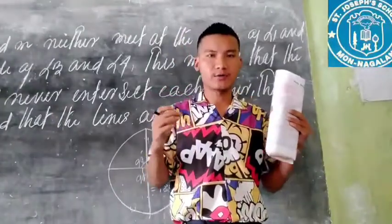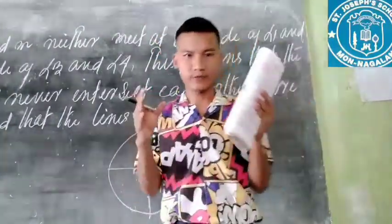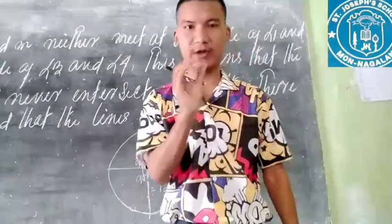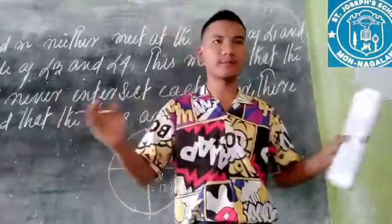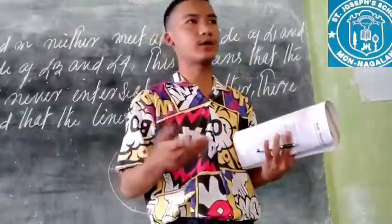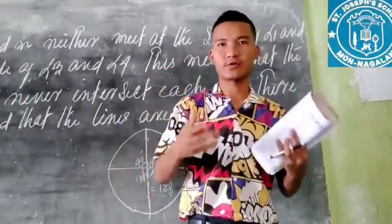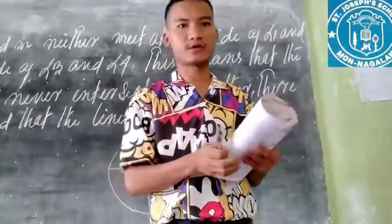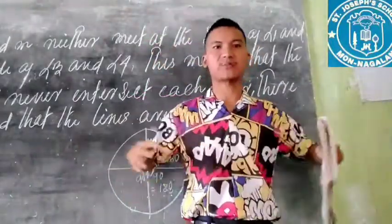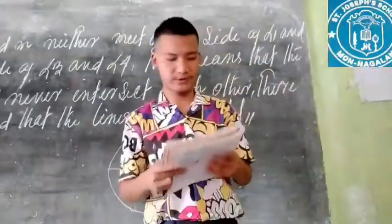Firstly the earthworm will contract its muscle — it will become small in size — and then it will expand, meaning it will become bigger in size. That is how they move. You might have seen how an earthworm moves. They move from one place to another without bones, only with the help of muscles. First they contract their muscle, then they expand — that is how they travel from one place to another.